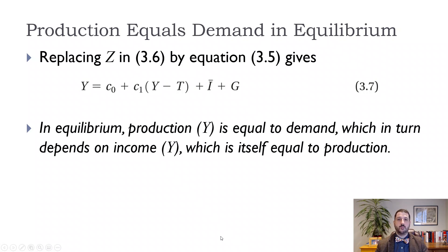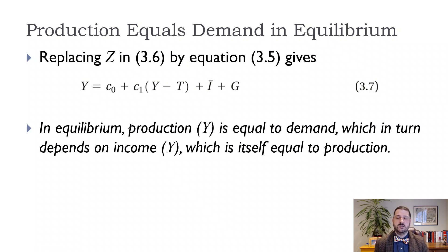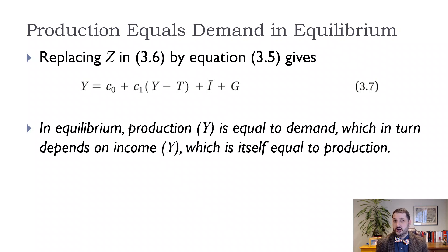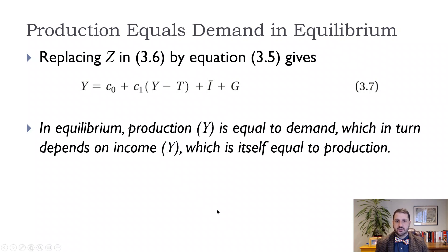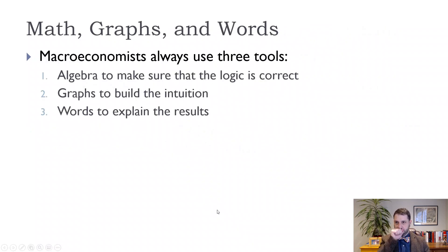Now we've got a Y on both sides of our equation, and we're going to use this to solve for our equilibrium output. By itself that's not that interesting, but more importantly it's going to allow us to see what happens when there's an exogenous shock to our system.